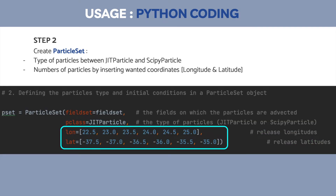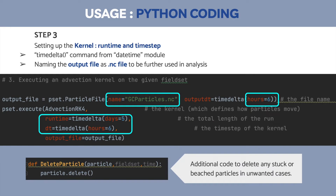The second part is to create your ParticleSet: you input the location — basically the coordinates of particle release — and the number of particles. In this case I'm releasing six particles at different coordinates. The next step is to set your runtime and time step. In this code you name your result file — in my case I named it 'gc_particle'. The output timestep is set to six hours.